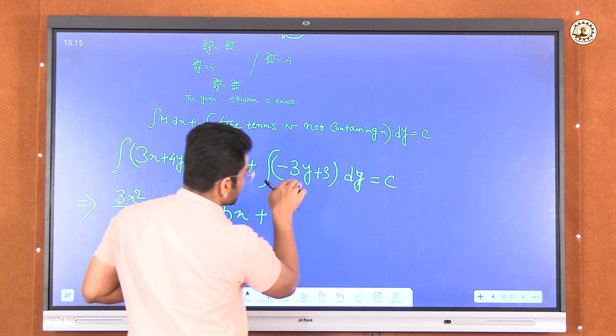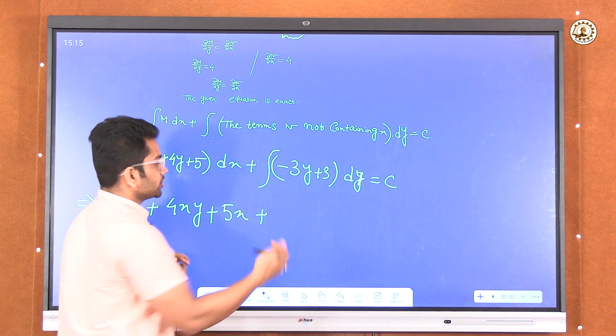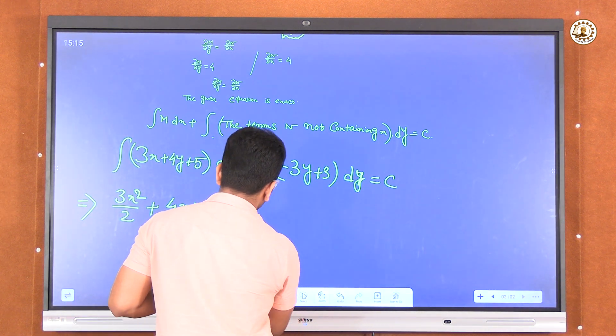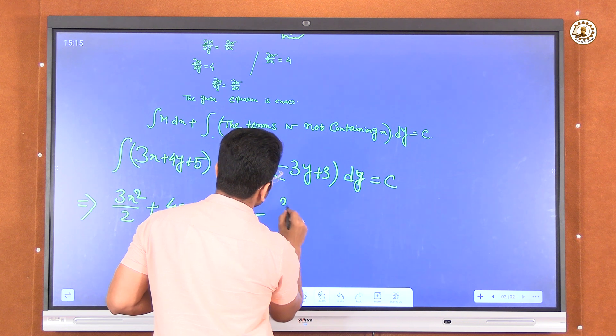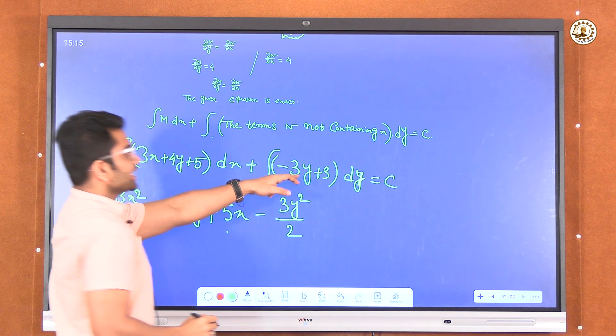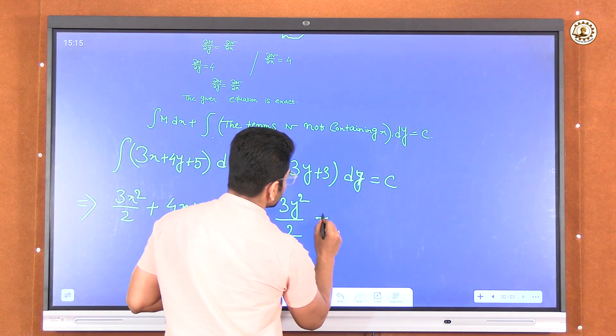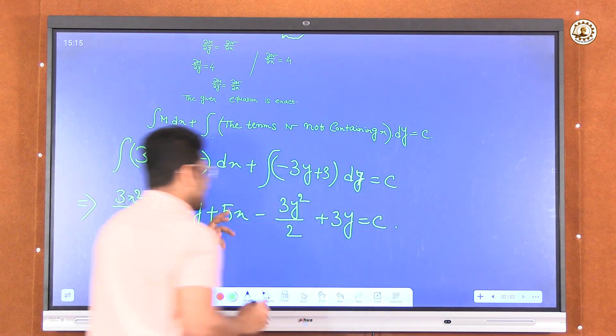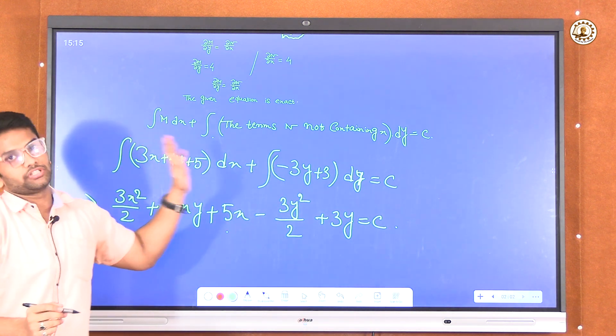Plus integration of -3y dy, so it will be -3y²/2. Integration of 3 dy will be 3y, equals c. So this is the solution of this differential equation.